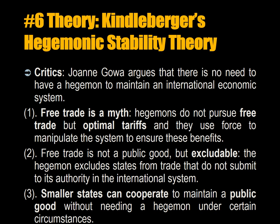Number two, free trade is not a public good but can be excludable. The hegemon excludes states from trade that do not submit to its authority in the international system. North Korea has a great many limitations on who it can trade with. States like Iran have difficulty exporting oil to certain countries that have sanctions on them, like Venezuela.